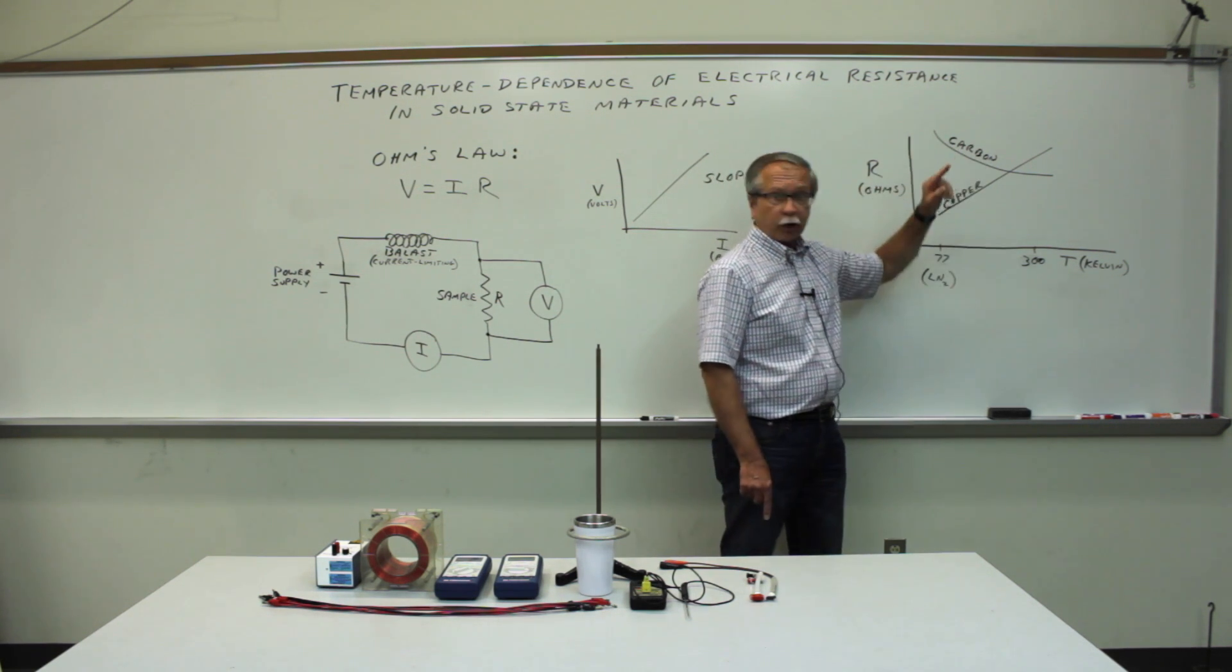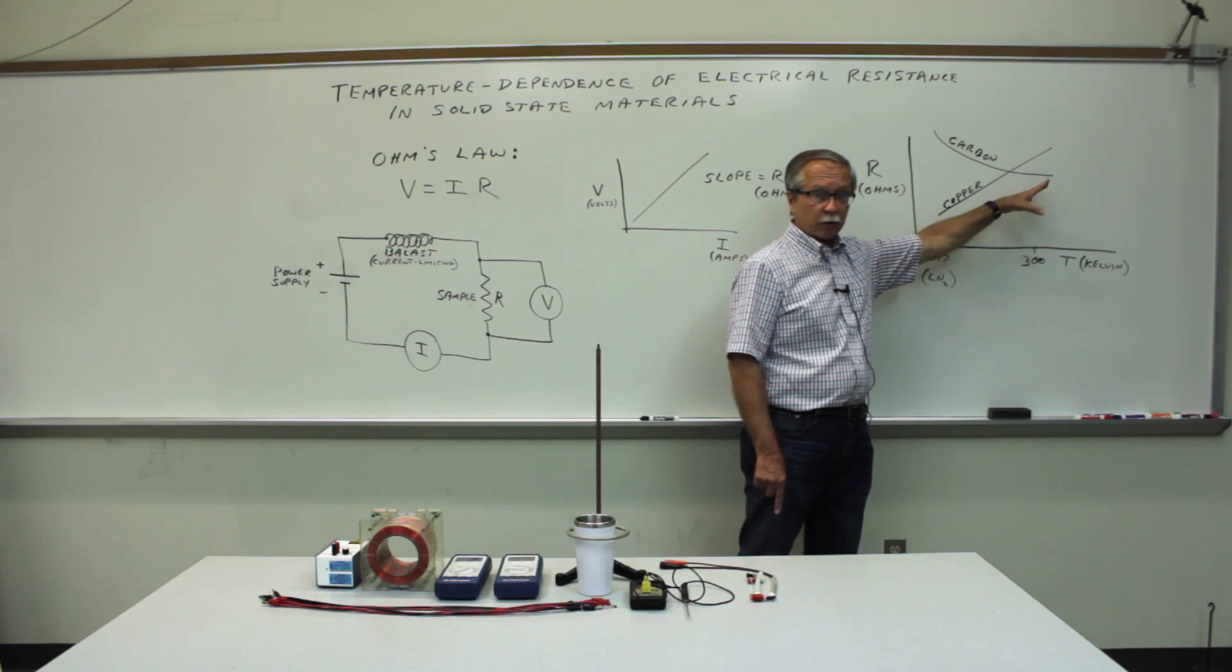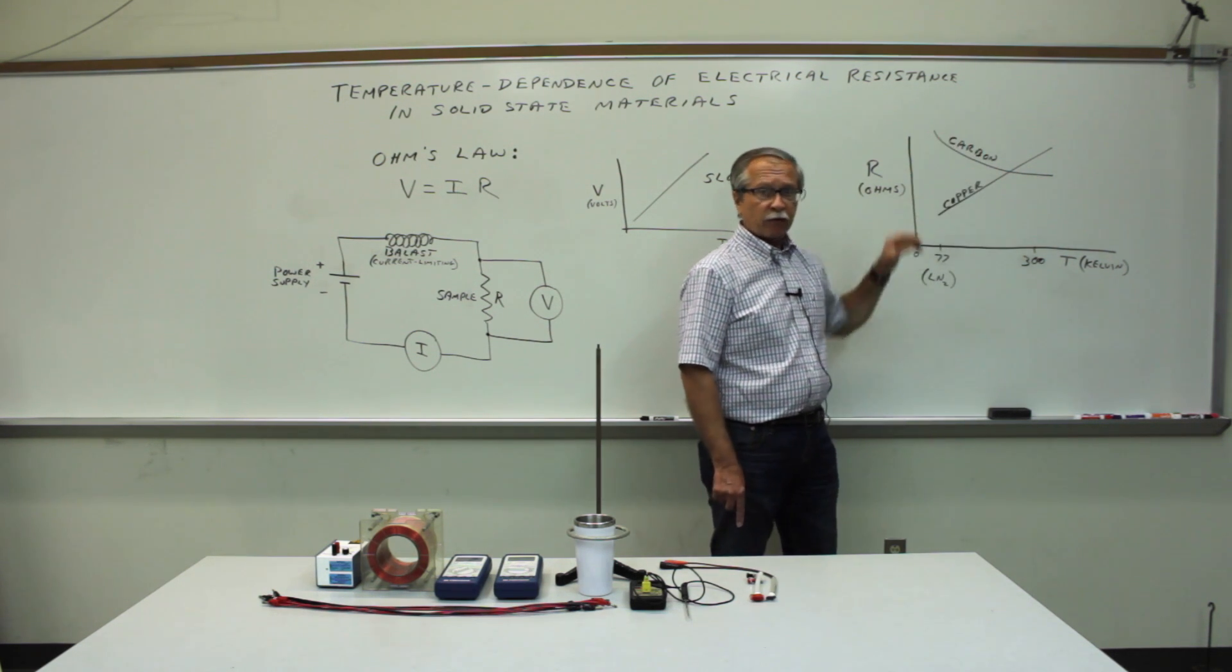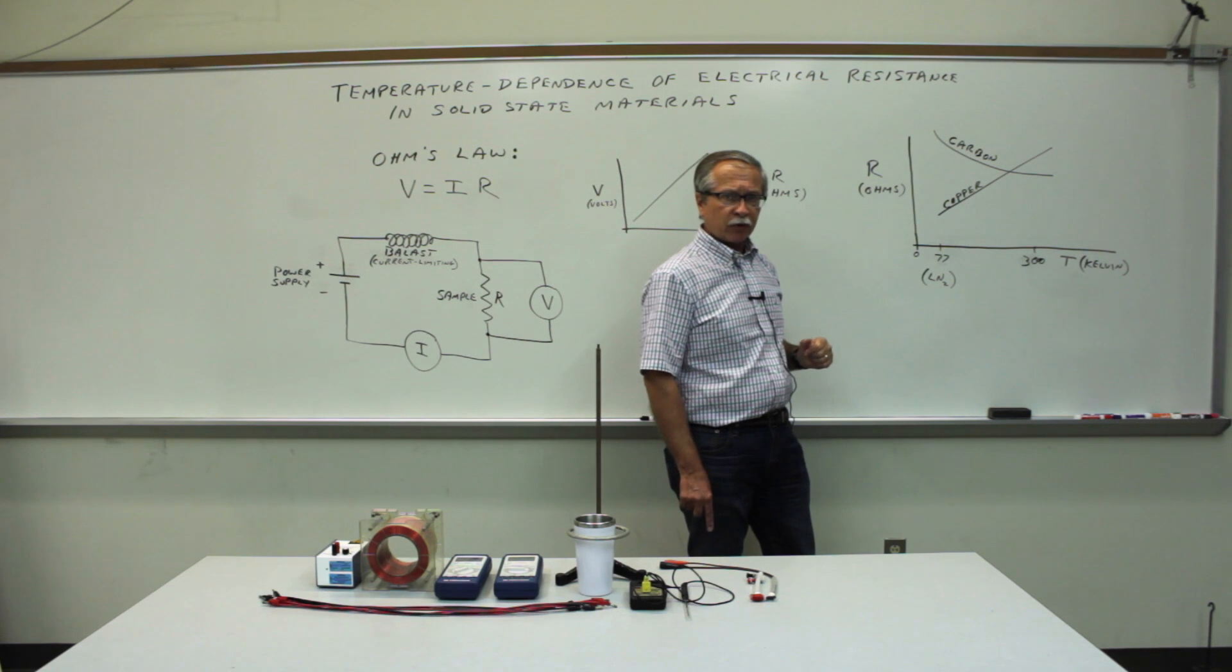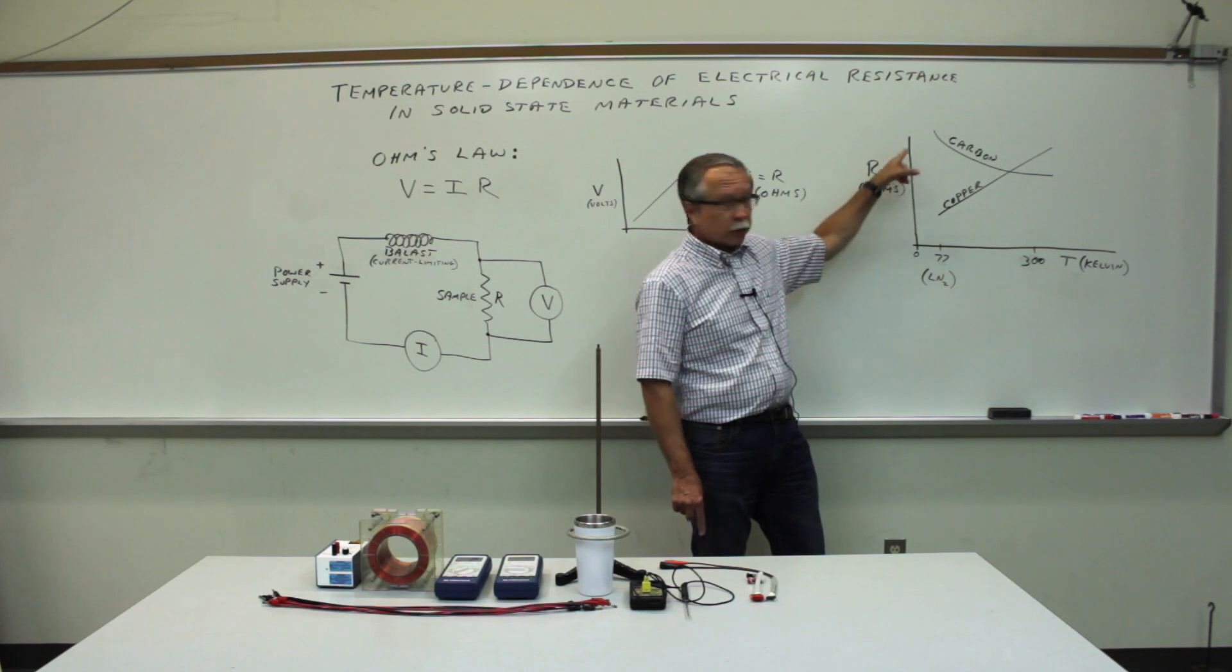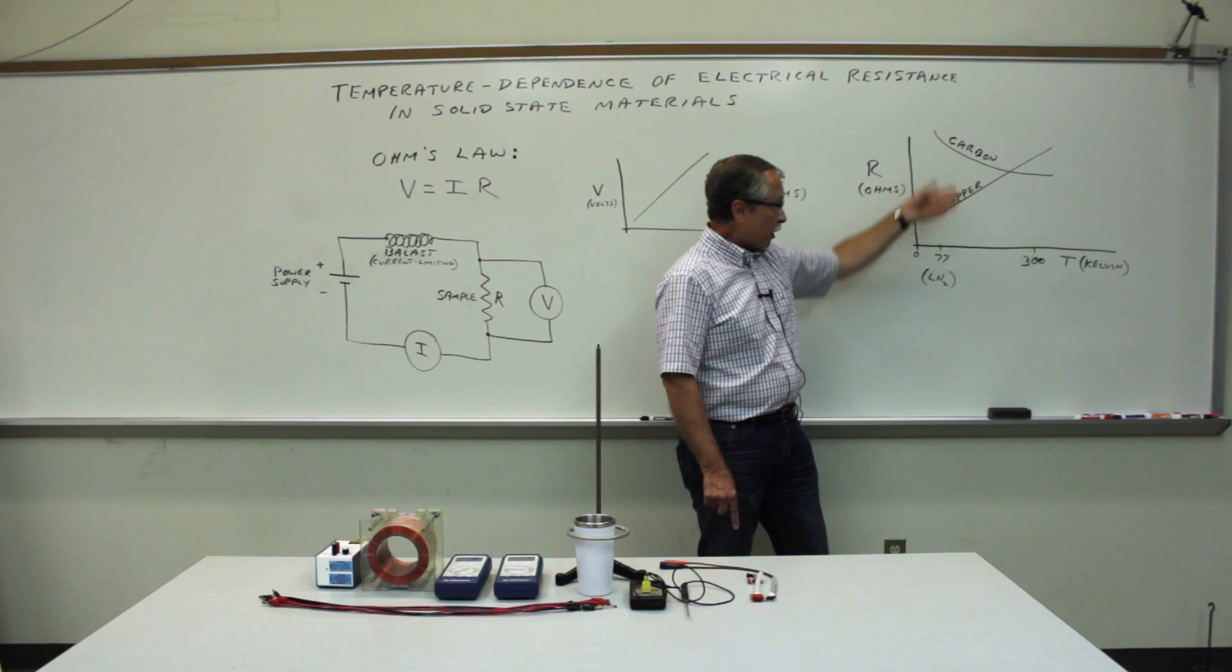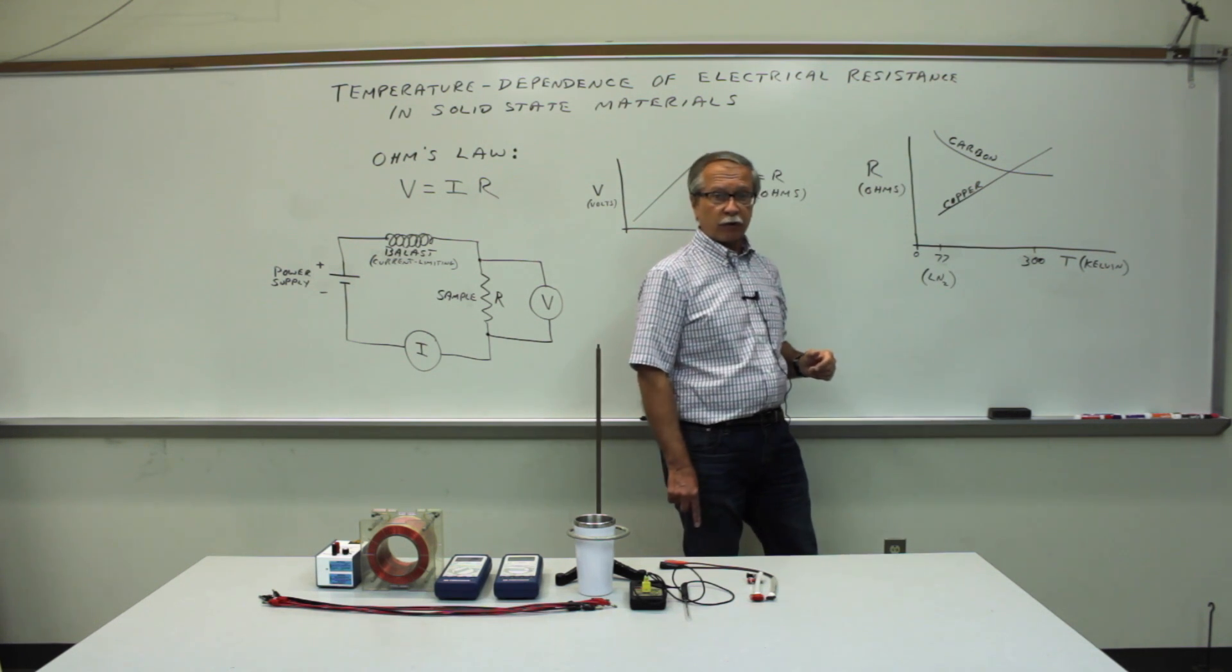And a semi-metal, like carbon, will actually decrease in resistance as a function of temperature. The physics for these different behaviors is a topic that we'll discuss in detail in class. But the goal of the experiment is to determine how does the resistance of these two different types of materials vary as you change the temperature of the sample.